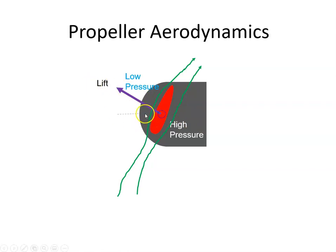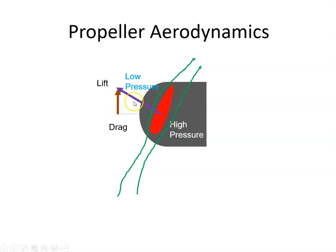That vector can be broken down into the horizontal and vertical component, and we're going to call this drag. It's exactly the same as a wing — we have an airfoil shape that produces lift and some drag. However, we don't call it lift and drag. So for a propeller, we call it thrust and torque.